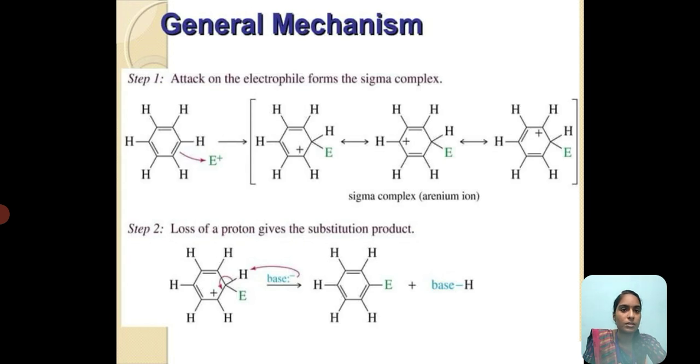The general mechanism of electrophilic substitution: First, attack on the electrophile forms a sigma complex, which on losing a proton gives the substitution product. In this chapter, we will see substitution mechanisms including alkylation, acylation, halogenation, sulfonation, and bromination.